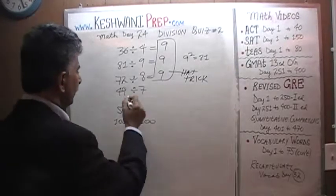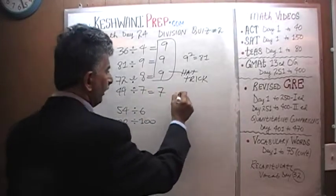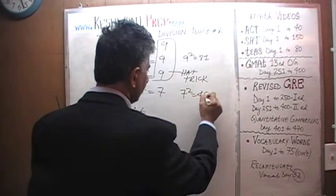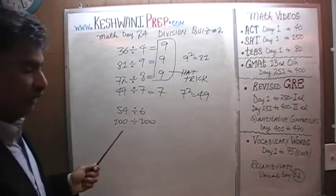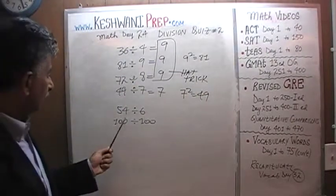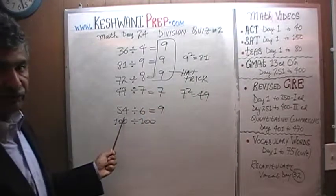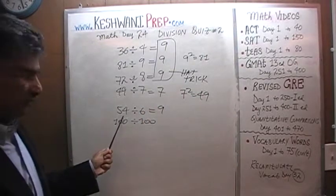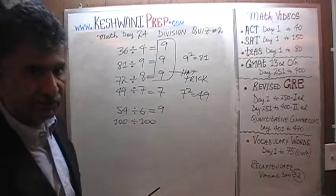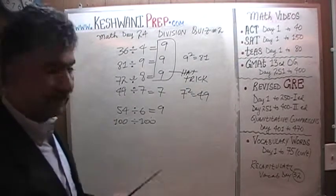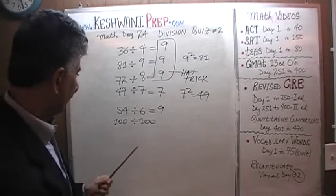49 divided by 7 is 7, again because 7 squared is 49. You have to know your squares by heart, at least 1 through 10. 54 divided by 6 is also going to be 9, because 54 is just 6 less than 60. And 60 would have been 10 sixes, so this is 9 sixes.